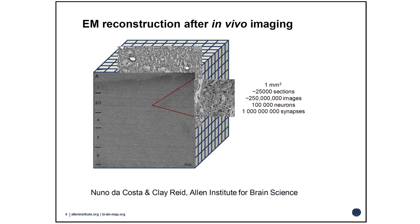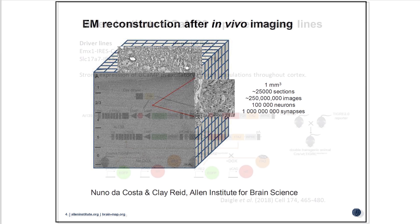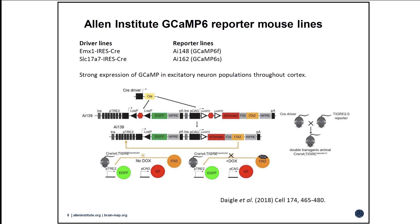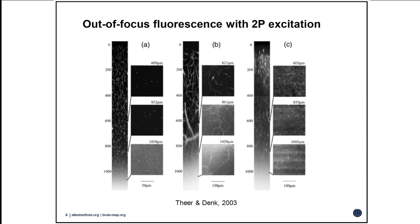There's a little practical dimension. The strategy we're really using is to use excitatory driver lines and to cross them with various GCaMP lines to drive expression at least in all of the excitatory neurons in cortex. And when you're working with a prep like this, one of the really big challenges, certainly with two-photon microscopy, is out-of-focus fluorescence.